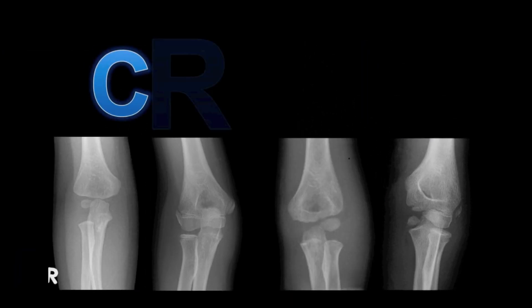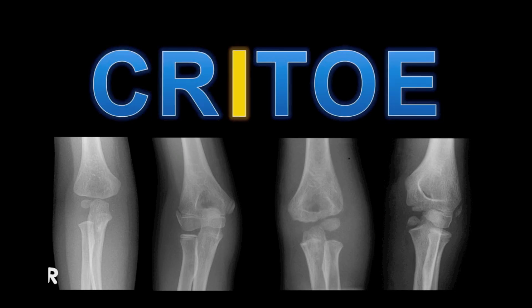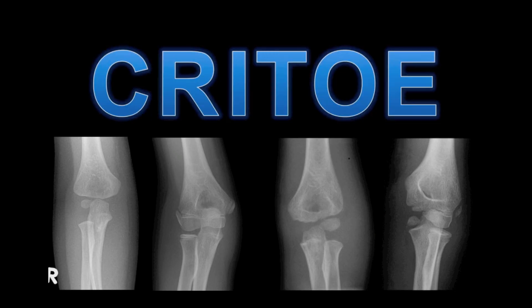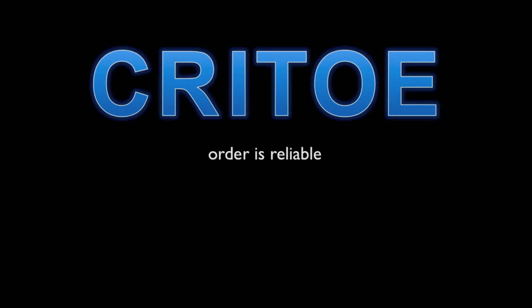In this video we're going to teach you the mnemonic CRITOE as a quick and simple way to remember the order of ossification centre appearances. We're going to look at a series of normal cases and we're also going to look at two abnormal cases to put our knowledge into practice. One of the great things about CRITOE and the elbow is that the ossification centres appear in a very reliable order.